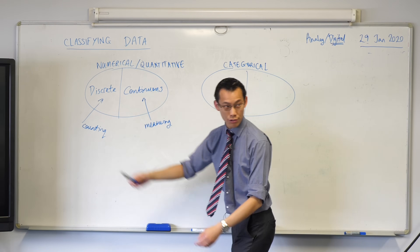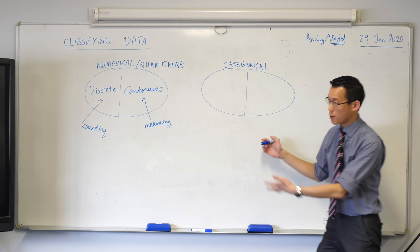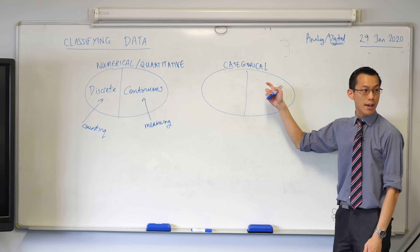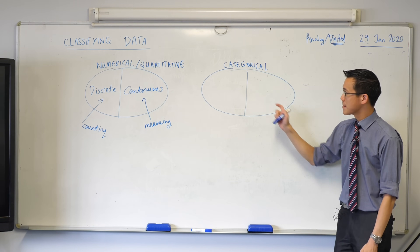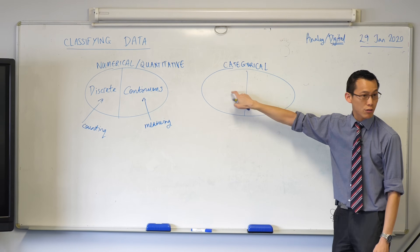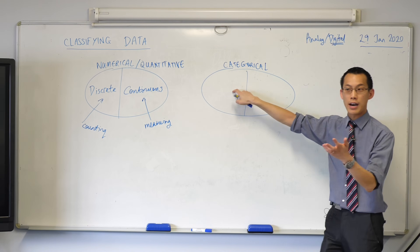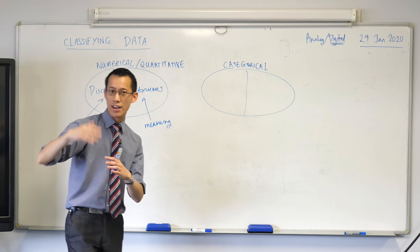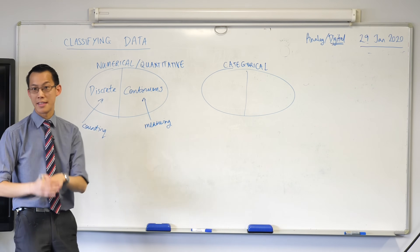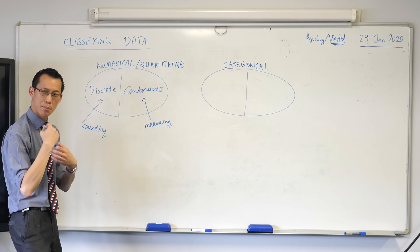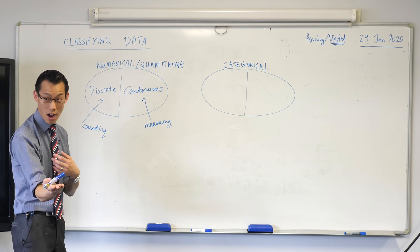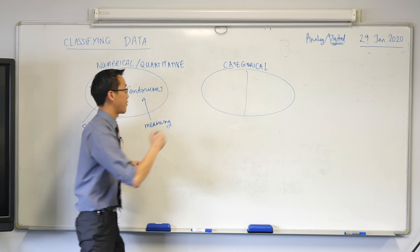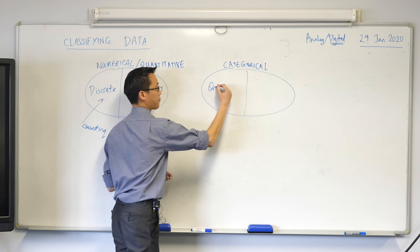So here are our two subsections of numerical. As promised, there are also two subsections of categorical data. Some categorical data you can put in order - from lowest to highest, or best to lowest, or something like that. And because you can put it in order, it's called ordinal.